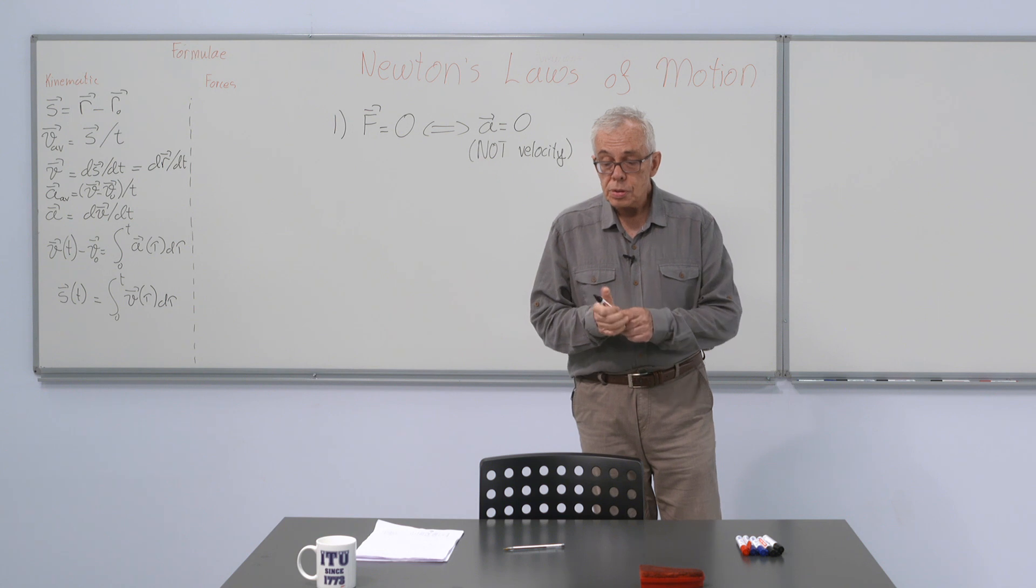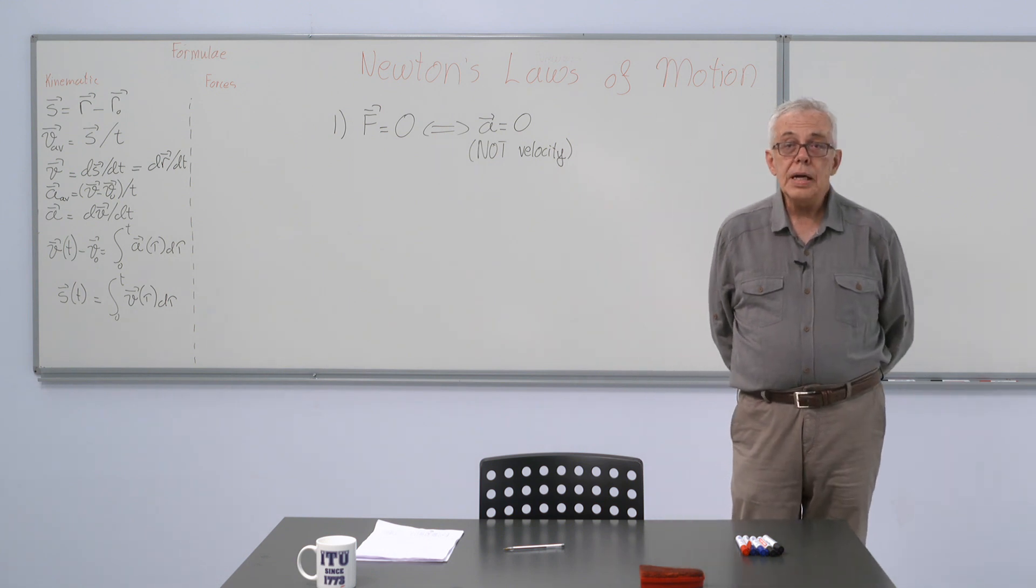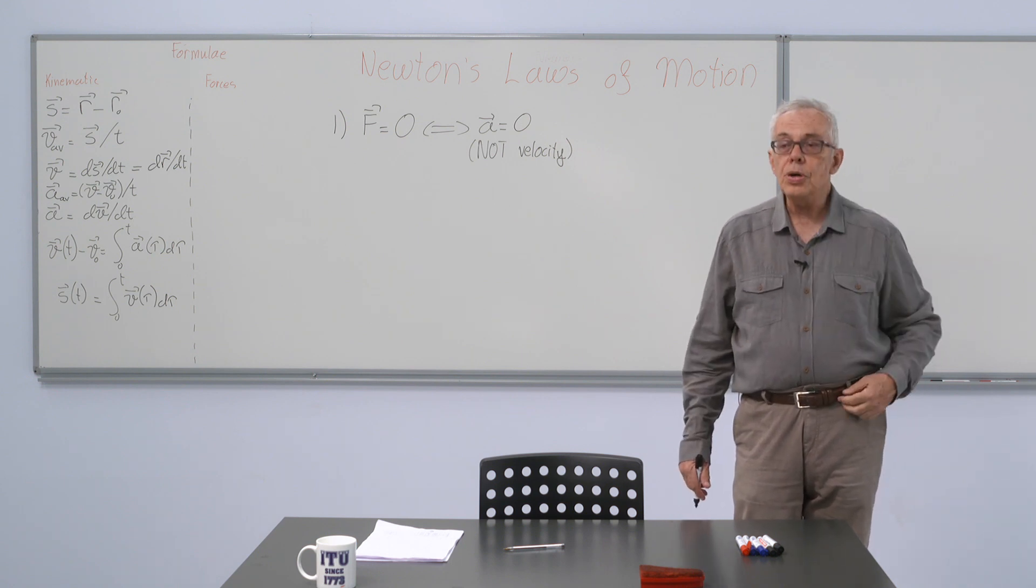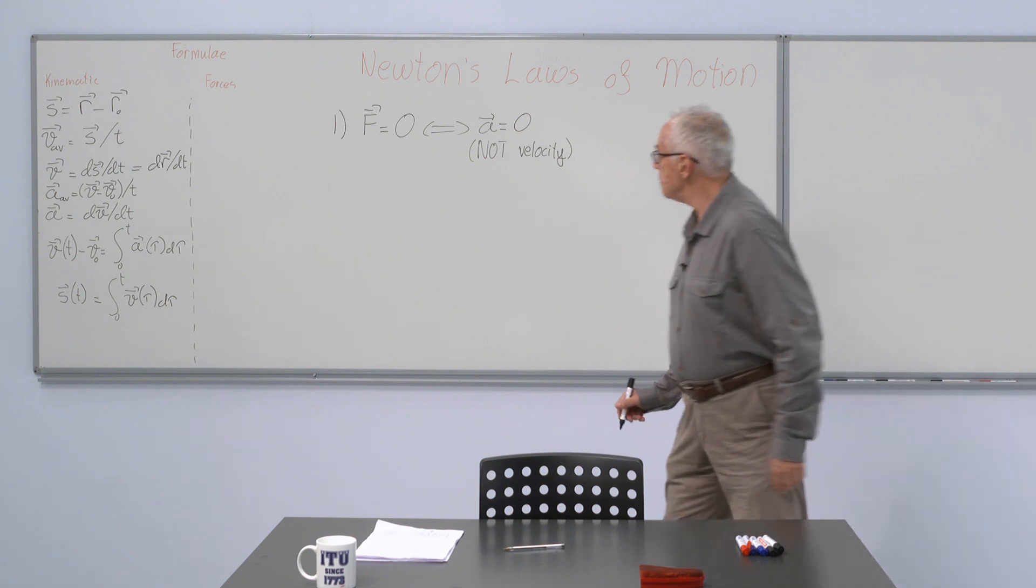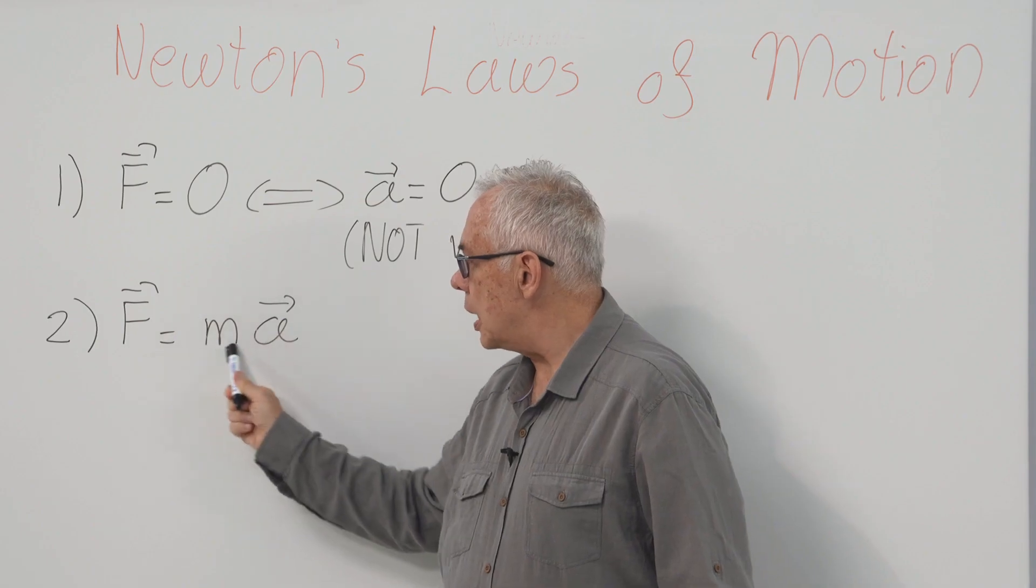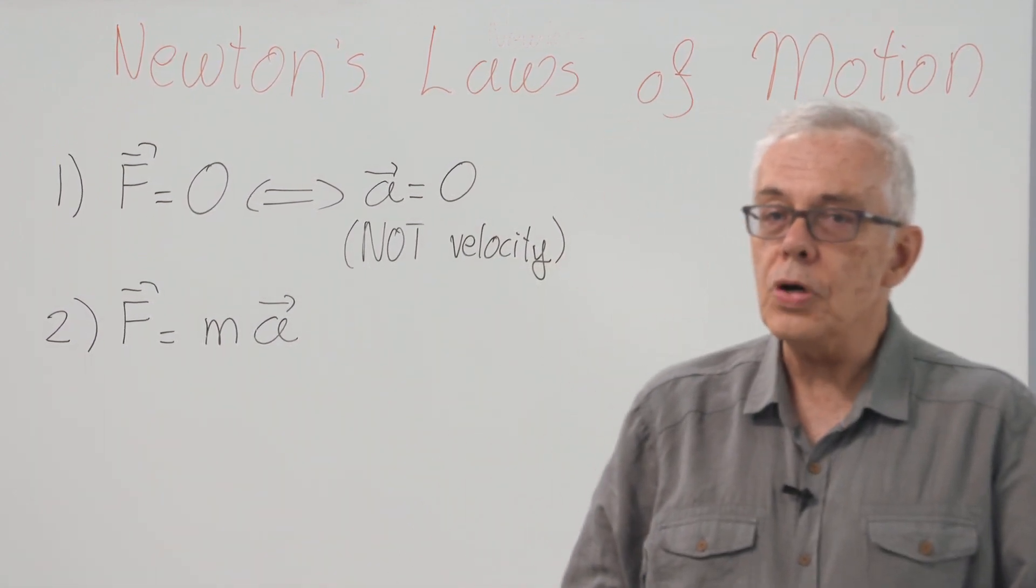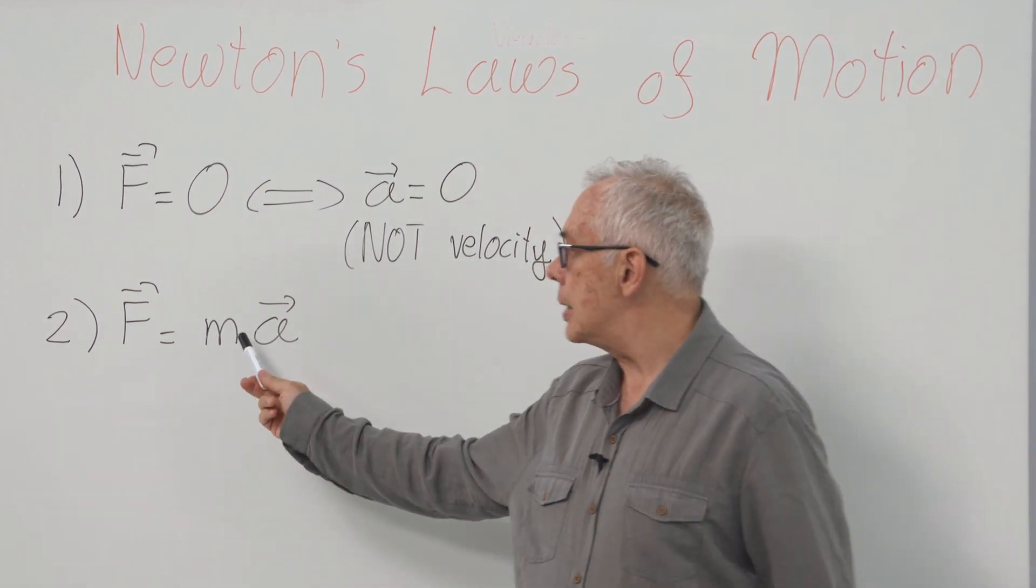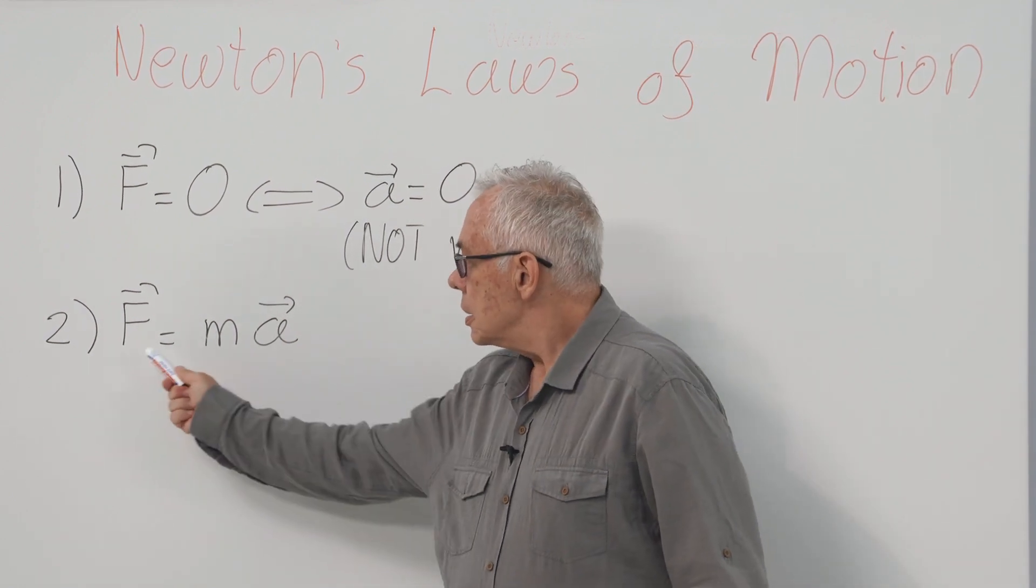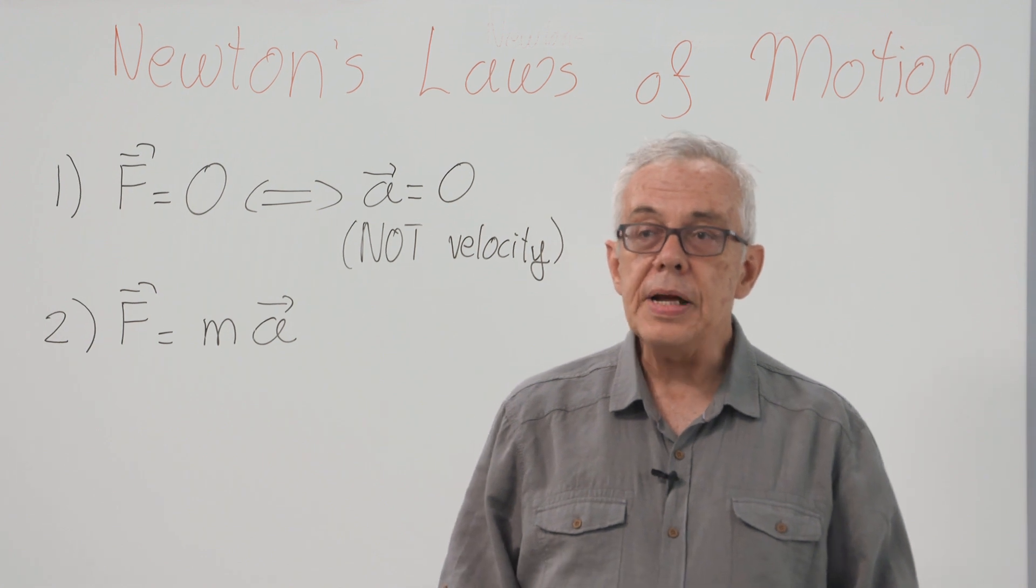Now, when there is force, then there is acceleration. And Newton's second law is that acceleration is proportional to the force per unit amount of matter. So, if you have a mass which is twice as large, you need twice the force to accelerate it. Or conversely, if you have twice the force and the same mass, you will have twice the acceleration.